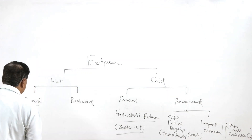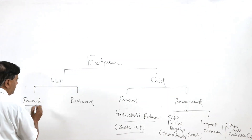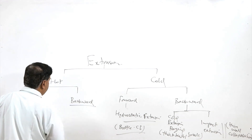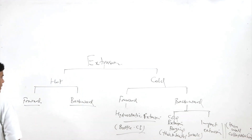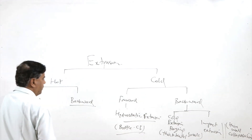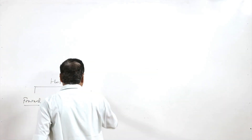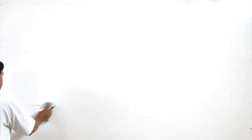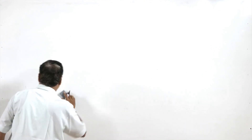Forward extrusion is very extensively used, and similarly hot backward extrusion is used for making a number of products. Now, one by one I will be describing these different extrusion processes.